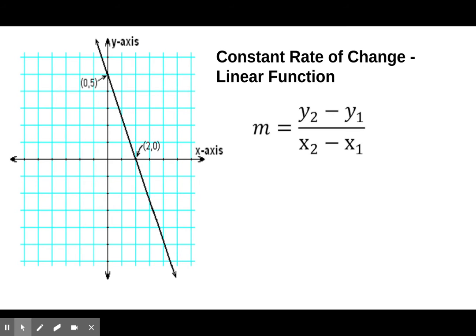We've already learned about the linear function and how it has a constant rate of change. What that means is as you look at the graph of a linear function, the rate of change will be the same between any two points on the graph. In order to find the rate of change, we use our slope formula: m equals y2 minus y1 divided by x2 minus x1.